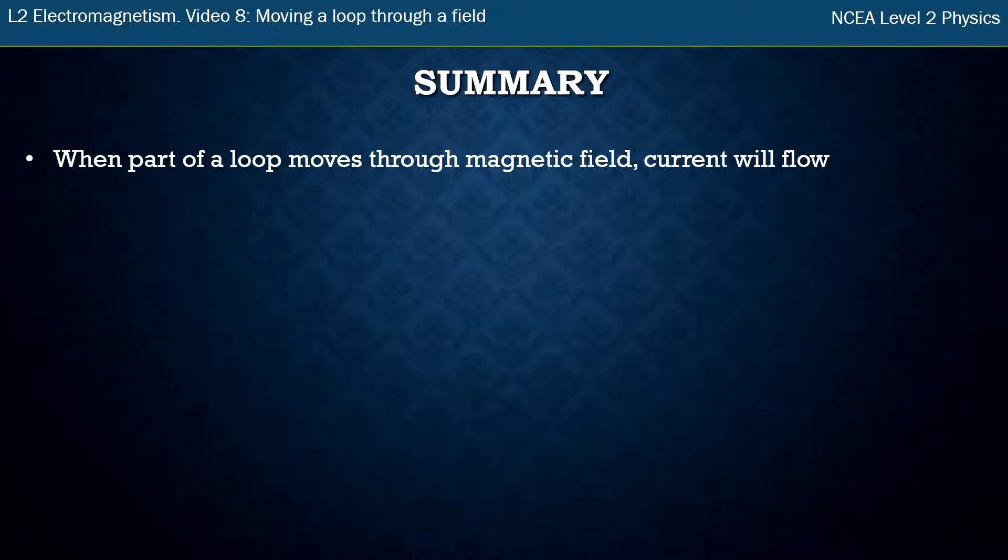In summary, when part of a loop moves through a magnetic field, we're going to get current. That was the first example. And the current flow is opposite to the direction of the electron flow, so we can work that out.